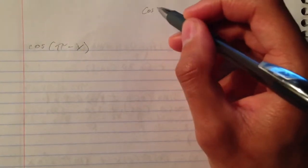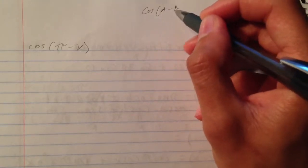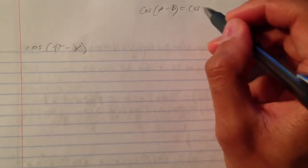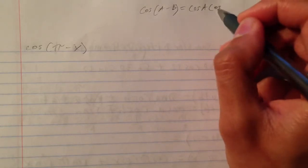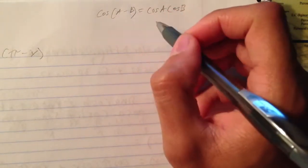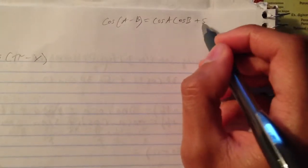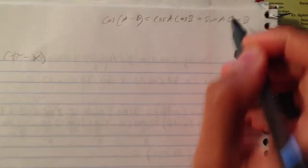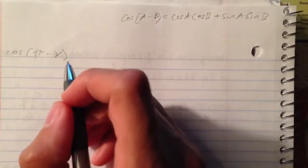So to generalize it, A minus B equals cosine A cosine B. With cosines we change the sign, so this would be positive, and then sine A sine B. Alright, so now that we got that listed, we can start.